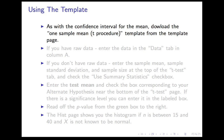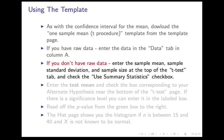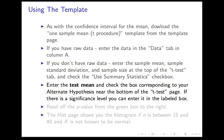So just to have them written down, here are the steps for using the template. You use the 1 sample mean t procedure template, just like you do the confidence interval. If you have raw data, you enter that data in the data tab in column A, exactly as with the confidence interval. And if you don't have raw data, just like with confidence interval, you enter the sample mean, sample standard deviation, and sample size at the top of the t-test tab. And you have to check the Use Summary Statistics check box so it knows to look there and not at your data.